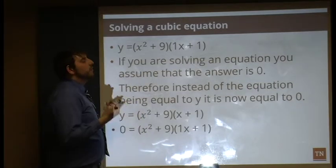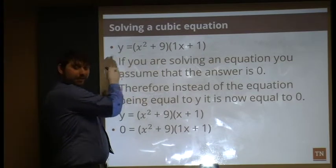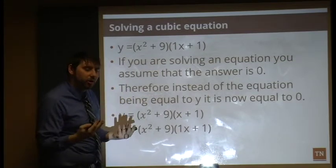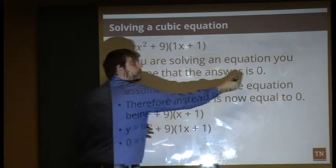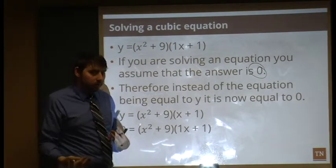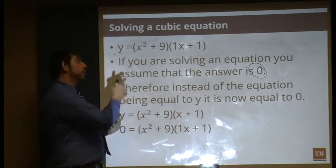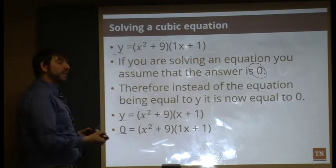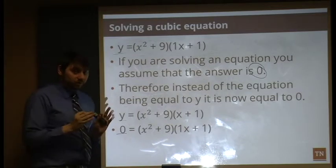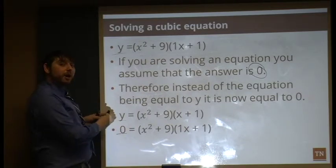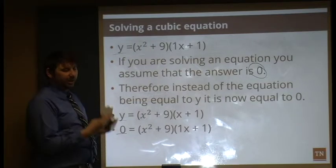Quick note on solving: if a problem asks you to solve it but doesn't show a number after the equal sign, it always has to be set equal to zero. In this case, there's no number given, so replace the variable with zero. Important: if there IS already a number there, don't change it to zero. Only substitute zero when there's a lone variable with no value given.